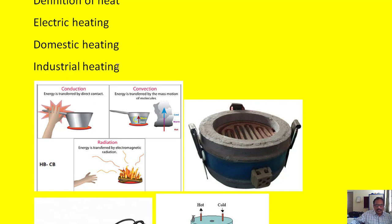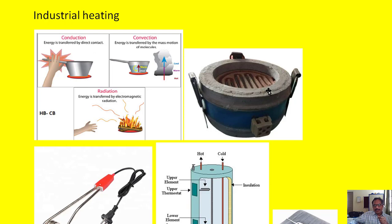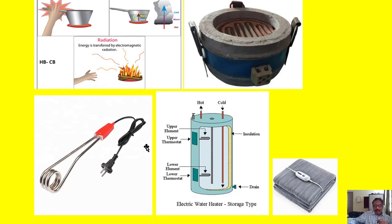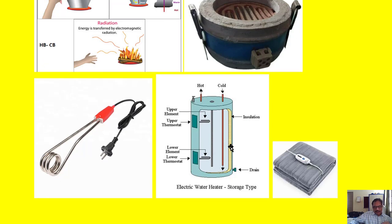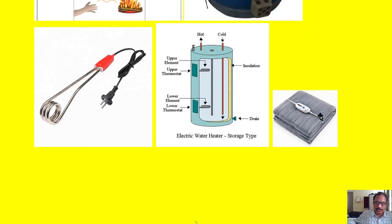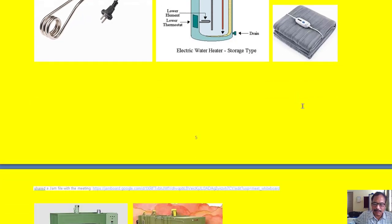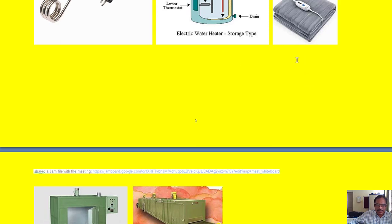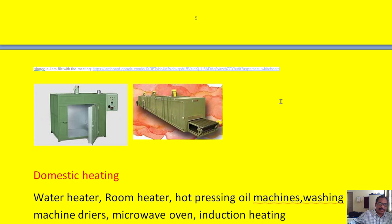Domestic heating equipment includes things we normally use: a mixi, an oven used for cooking, a heater used for heating water in a bucket, a geyser used to store and heat water, and an electric blanket used during winter to keep the body warm. These are all domestic applications of electric heating, and they all operate normally with a single-phase AC supply.